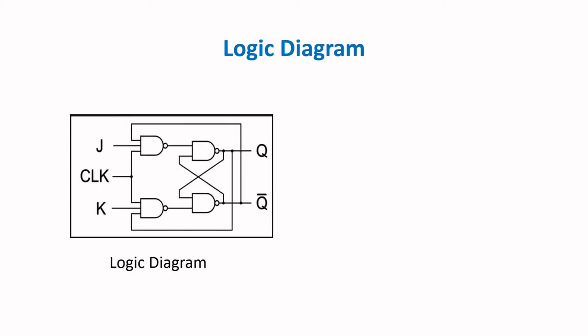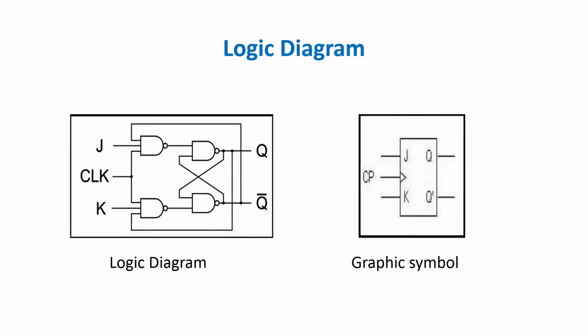The logic diagram of the JK flip-flop is given below. The inputs are J, K, and clock, and the outputs are Q and Q bar. In this diagram, NAND gates are used. The graphic symbol of JK flip-flop is also given, where J, K, and clock are the inputs and Q and Q bar are the outputs.